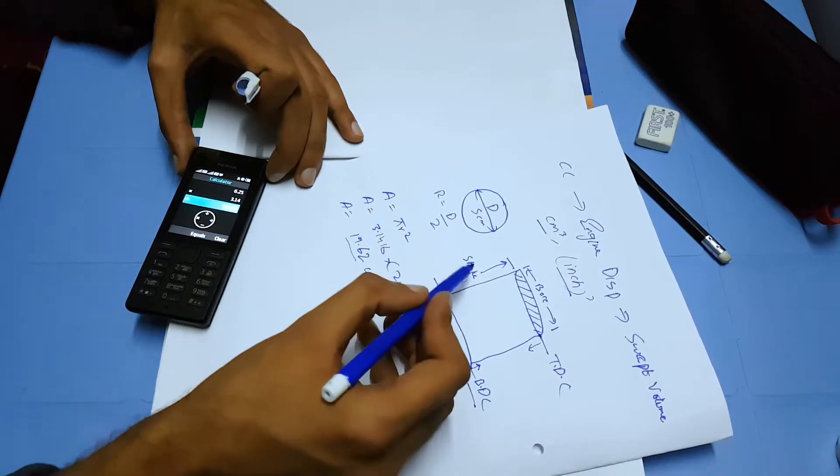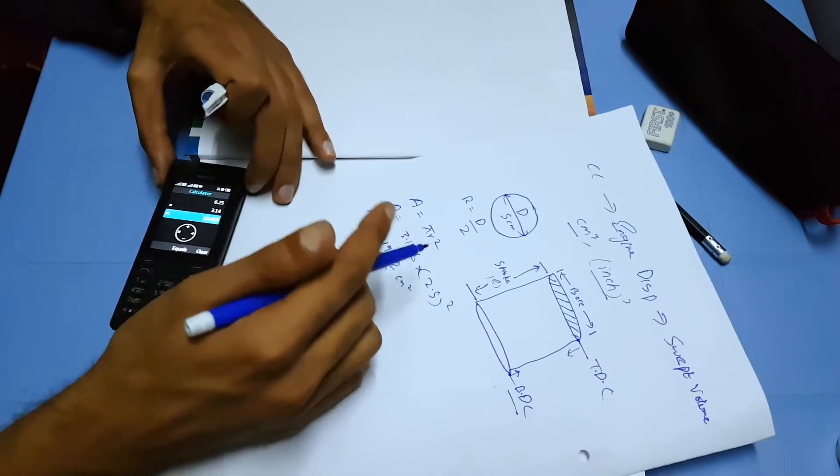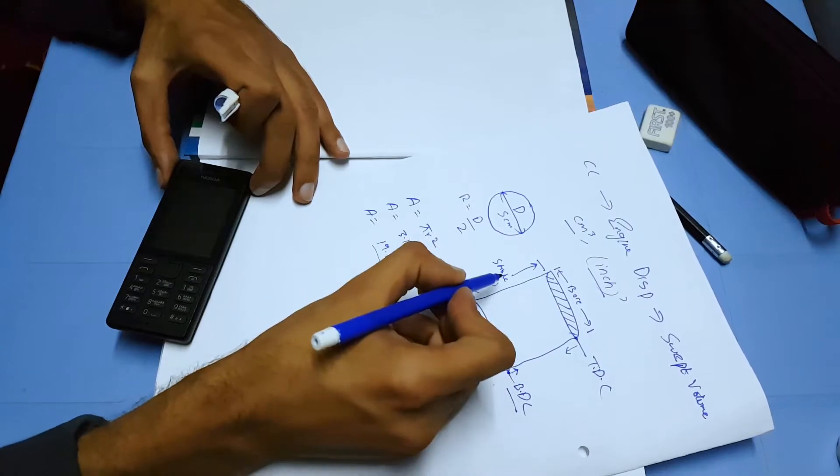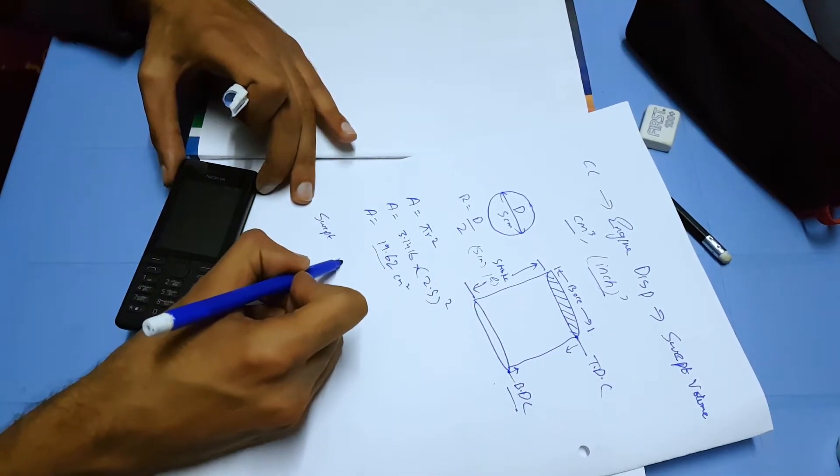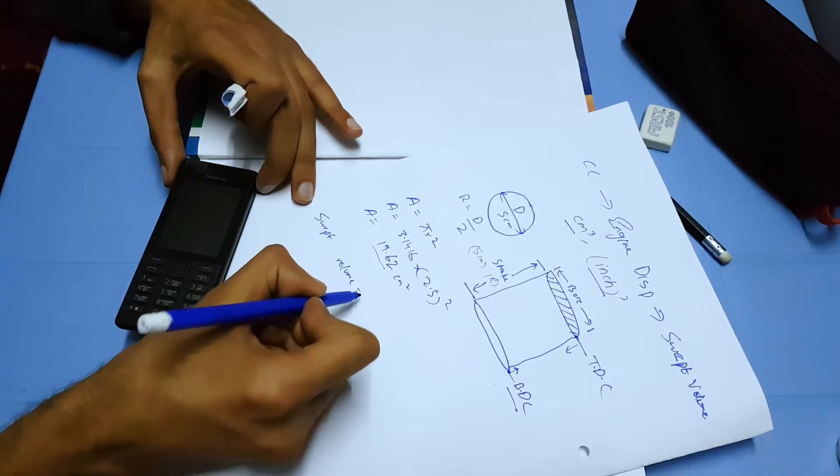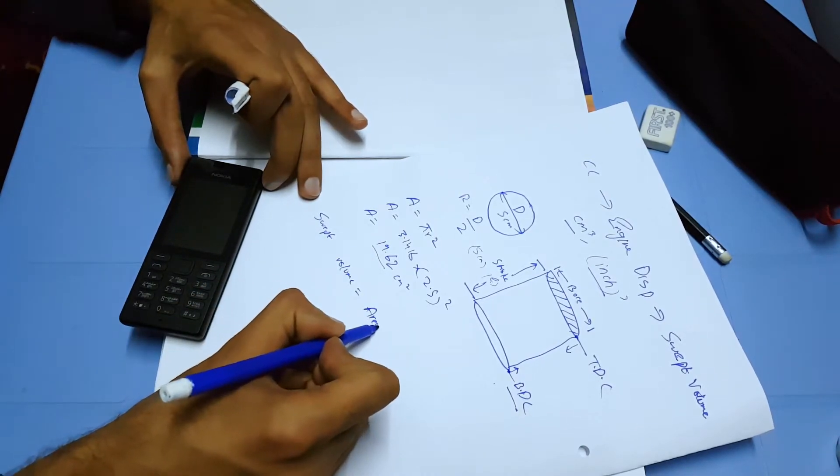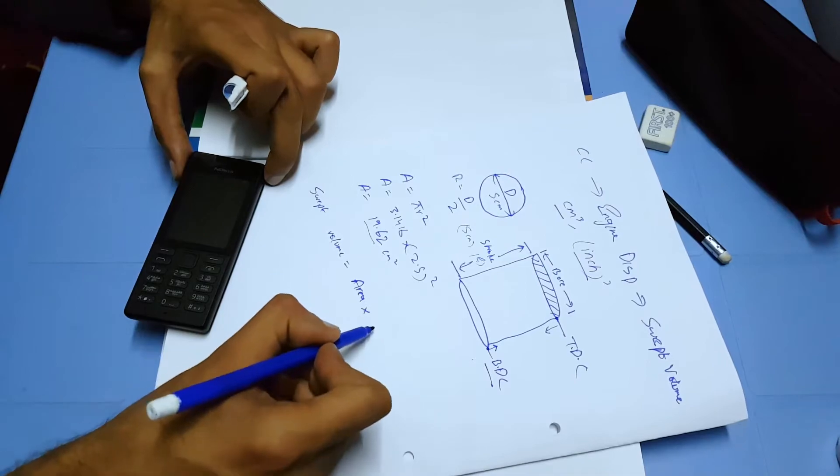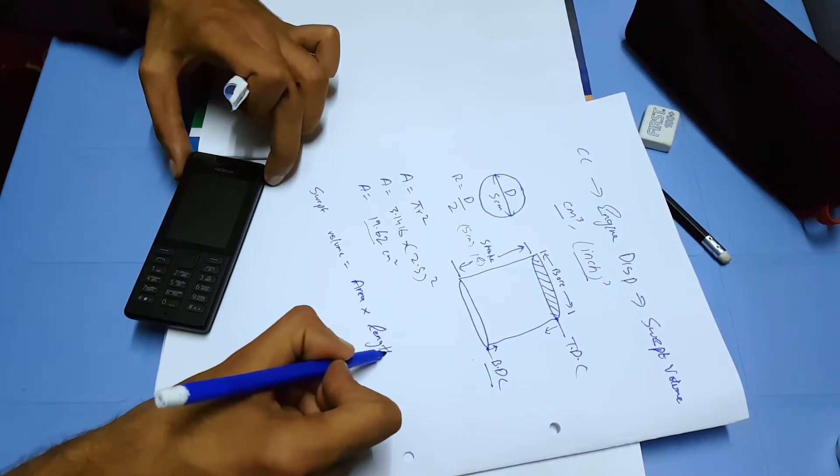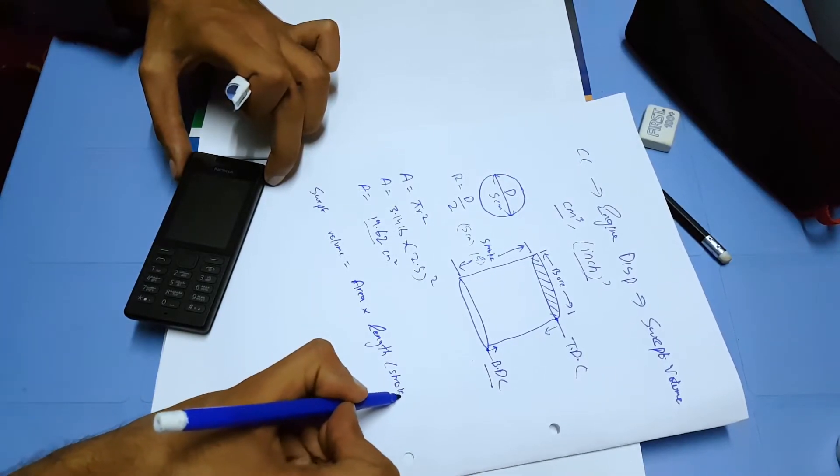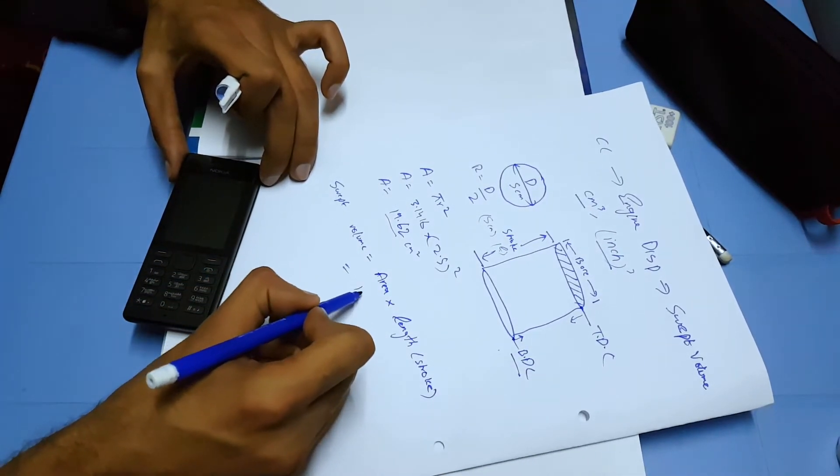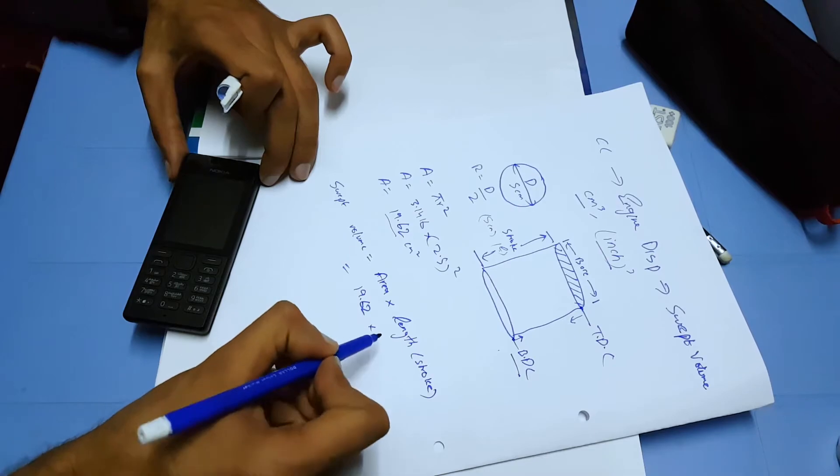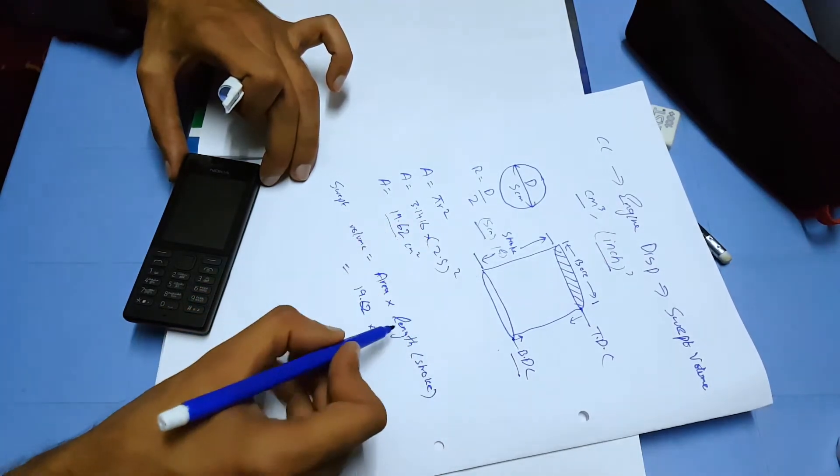multiply this area by the length of stroke. For example, if your length of stroke was also 5 centimeters, then swept volume equals area multiplied by length of stroke. So area was 19.62 and I assume my stroke length is 5 centimeters.